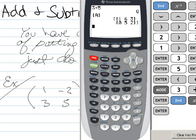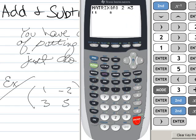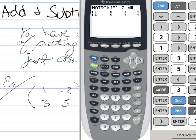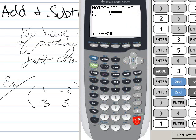Alright, so the first thing I have to do is I have to go into my matrix. I have to edit it. And I have to say, well now I want a 2 by 2. And the elements are going to be 1, negative 2, 3, and 5.